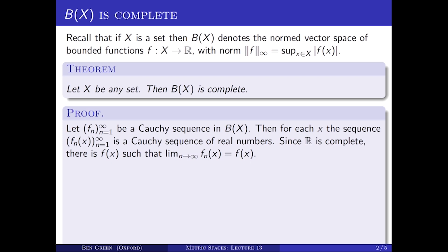So for each value of little x, I've got a Cauchy sequence of real numbers, consisting of the values of Fn(x), n goes one, two and so on. Now, the real numbers are complete and therefore each of those Cauchy sequences converges. We'll call the limit of the sequence Fn(x) as F(x). So there is for each x a number F(x) such that the limit as n tends to infinity of Fn(x) equals F(x).